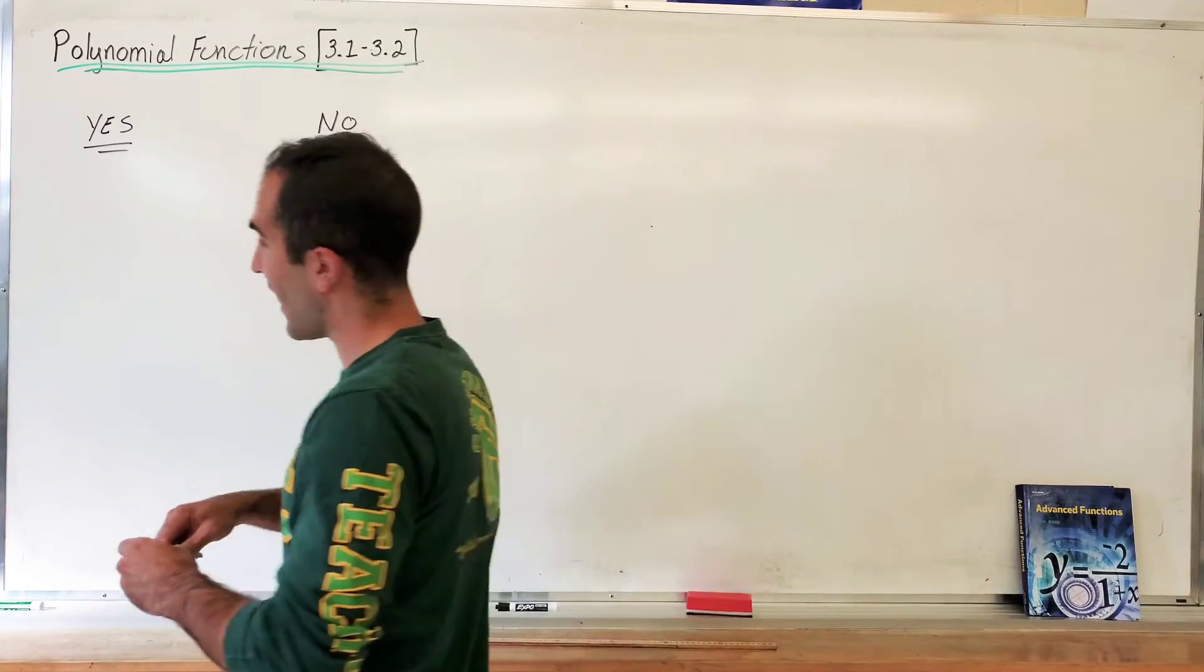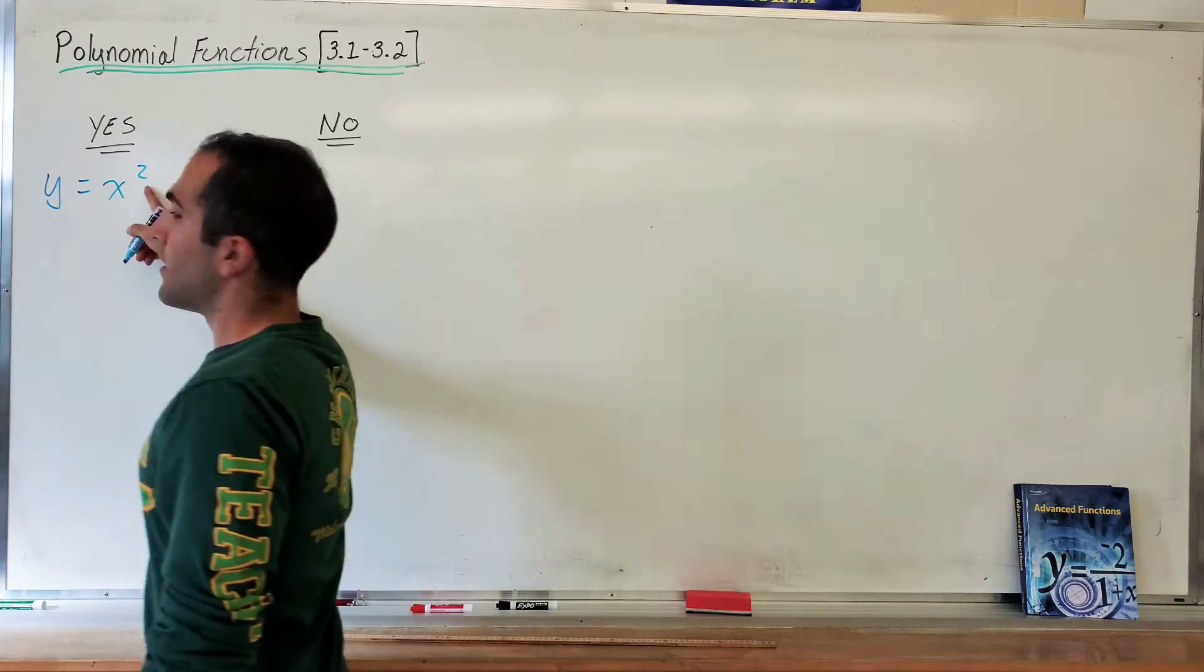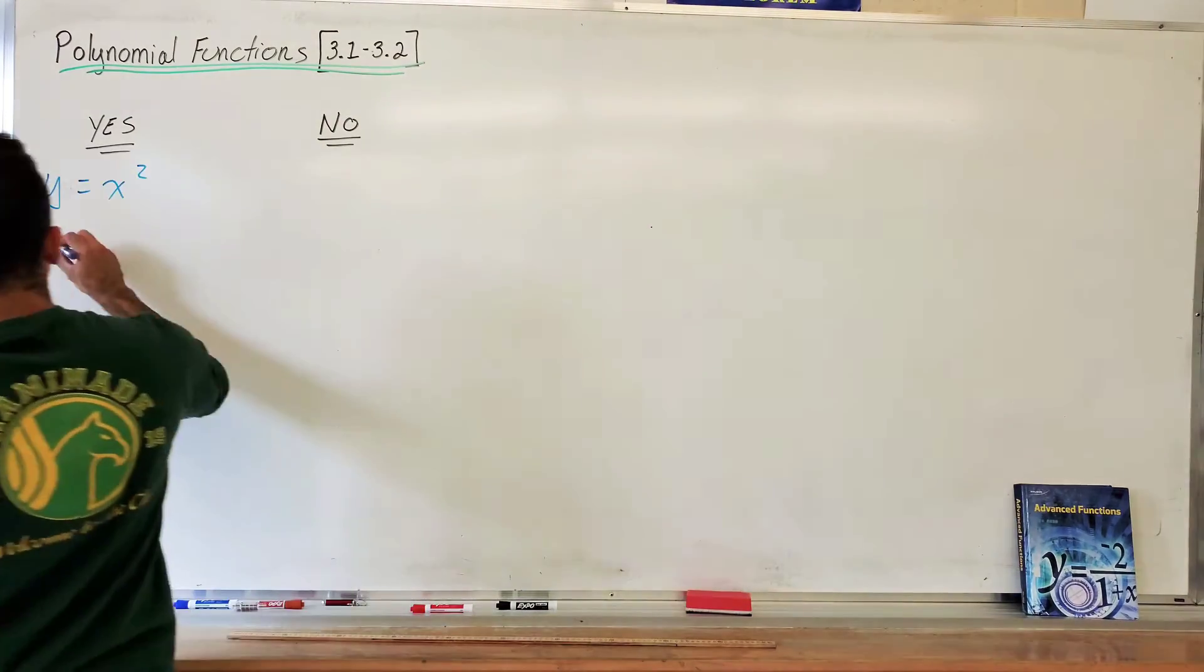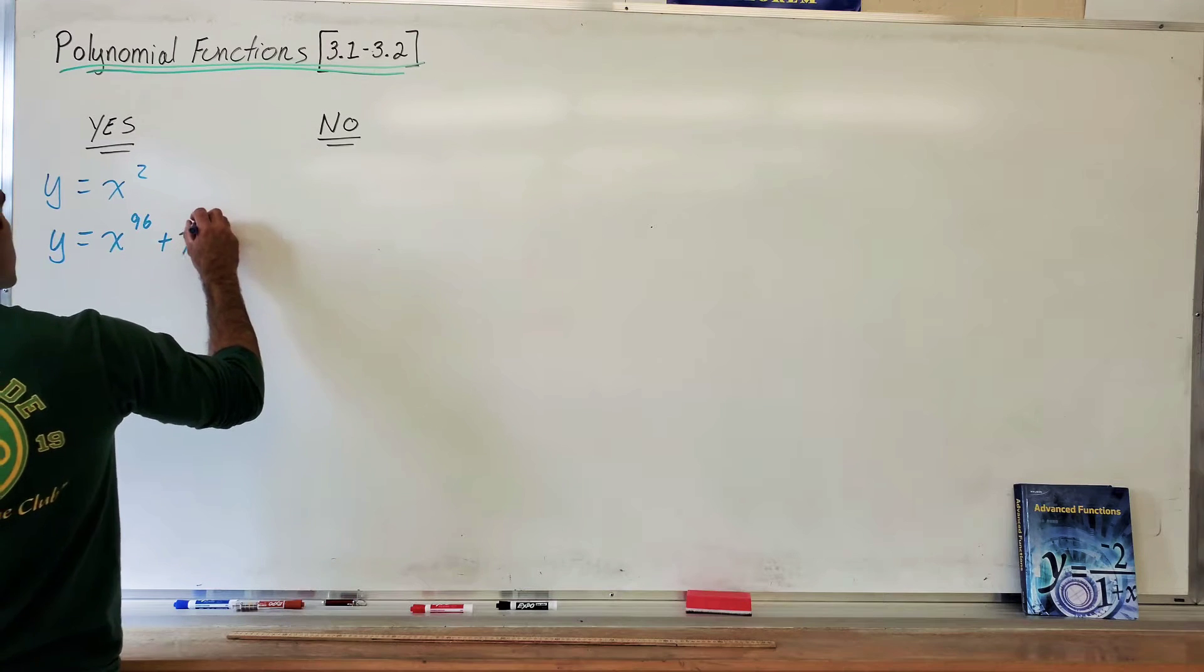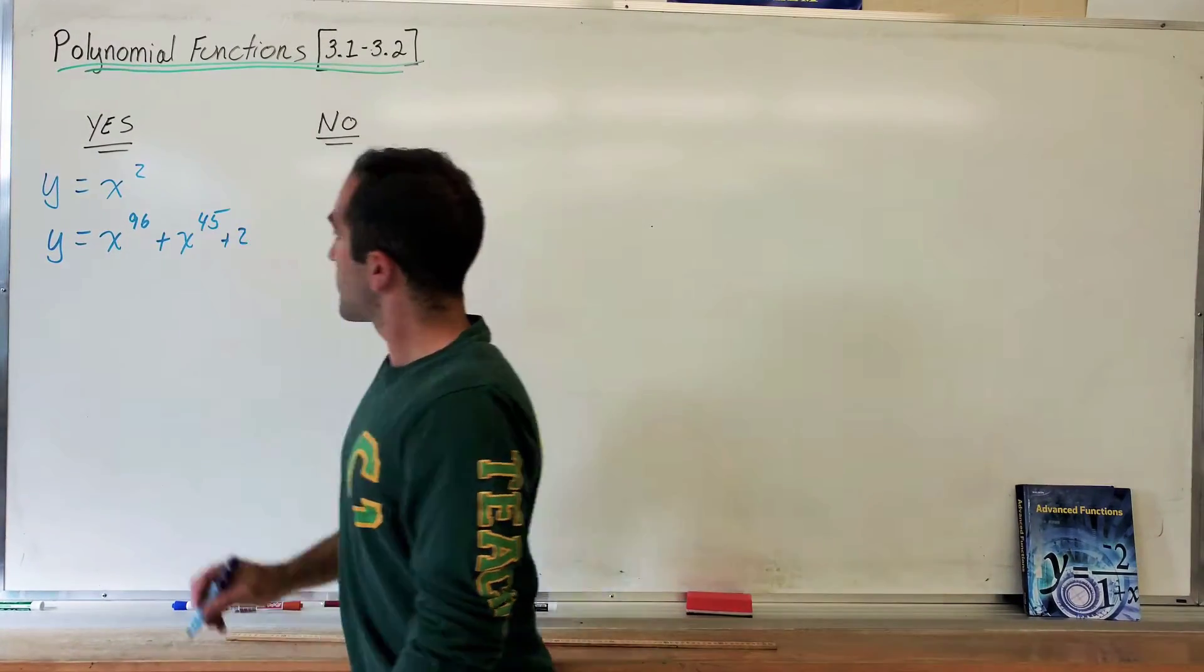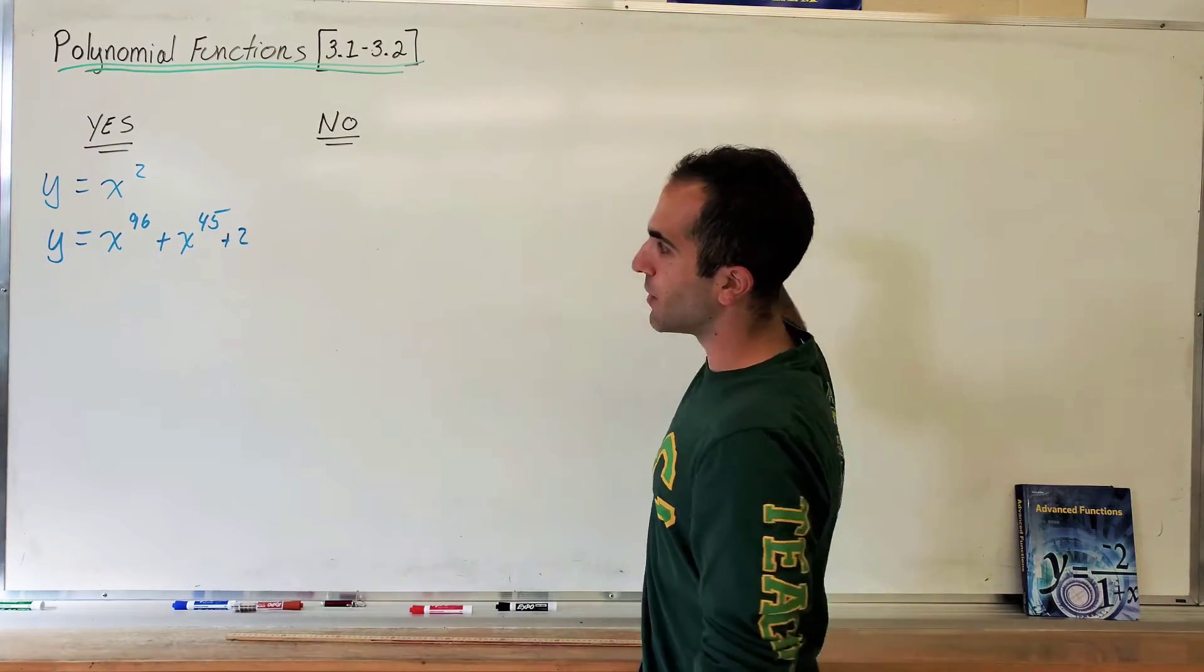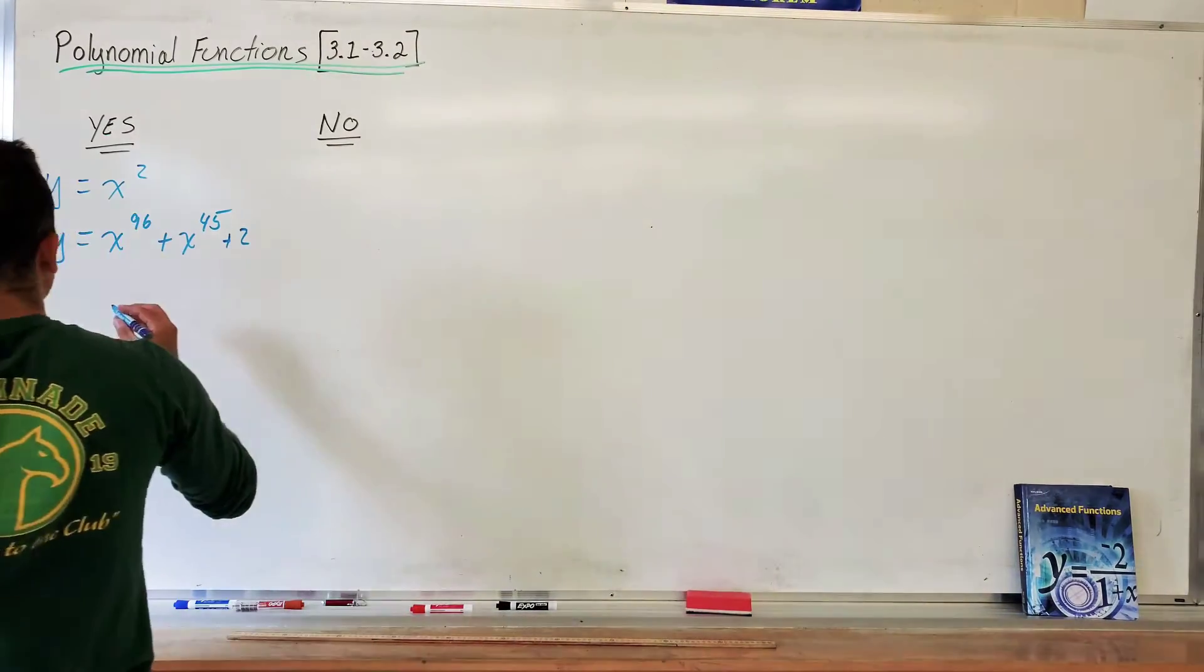Polynomial functions are anything that had natural numbers, or I guess integers, positive integers, as the exponent. So it could be anything. It equals x to the 96 plus x to the 45 plus 2. Anything that doesn't have complicated exponents, or roots, or trig is just straight up a bunch of x's with an exponent. That's as easy as I can explain it, I guess.